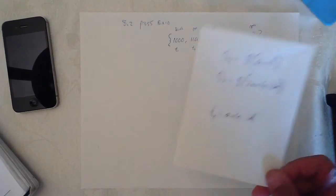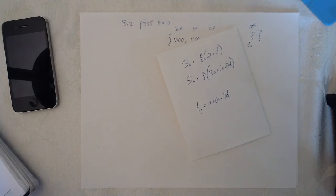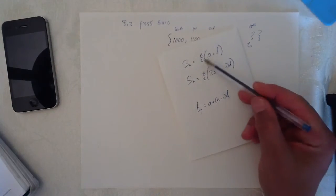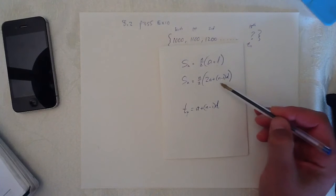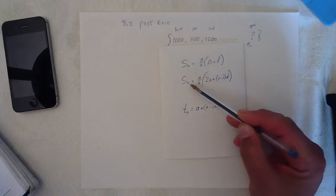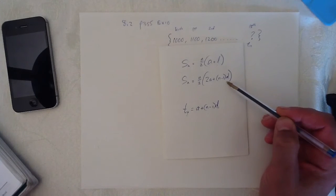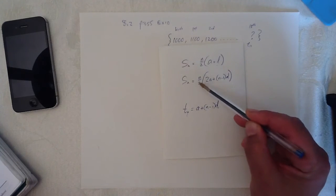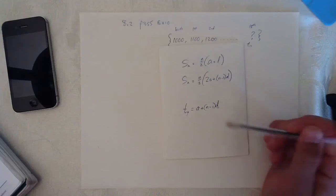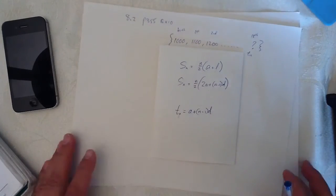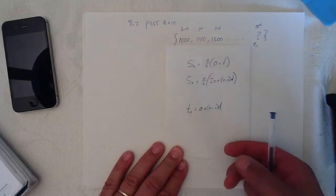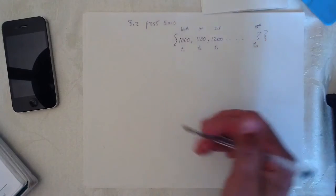Once you've realized there are 19 terms, choosing the correct tool from your little toolkit here is easy. Because we're looking for a sum, so it's going to be one of these two. We don't know the last term, so therefore it has to be this one. And plugging the values into this is relatively easy. The only thing we don't know is the sum, so we should get numbers for everything in here. So go ahead and do that. And we'll see if you get the same answer I do.